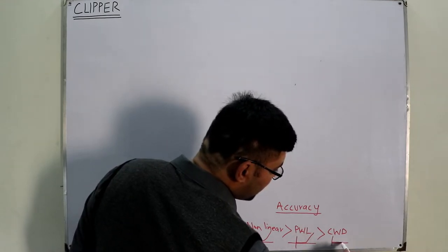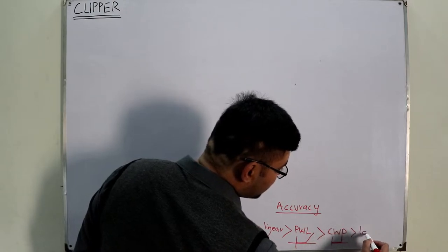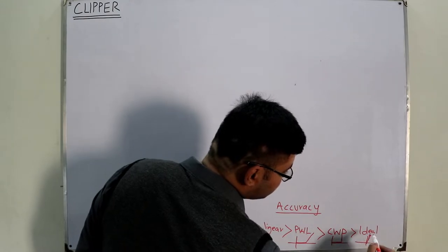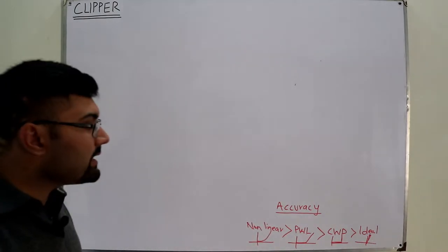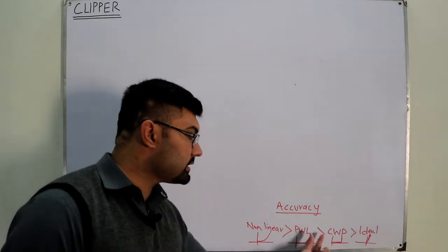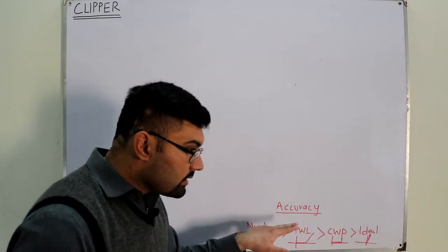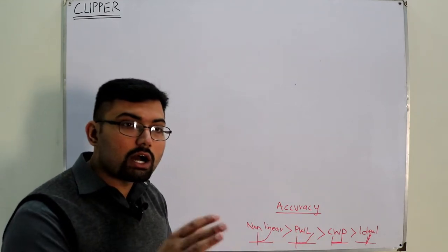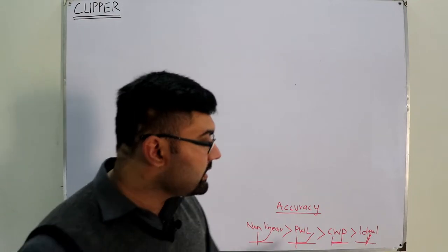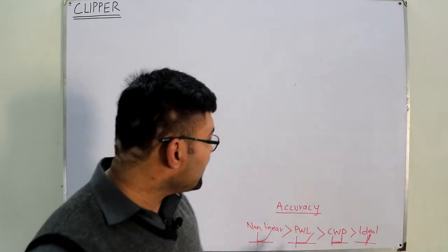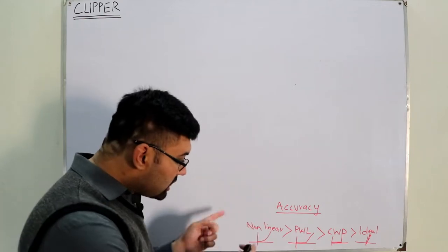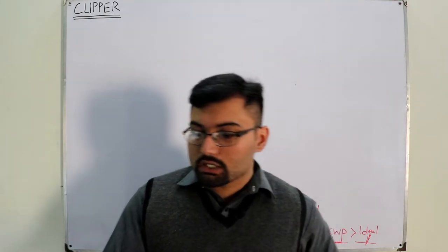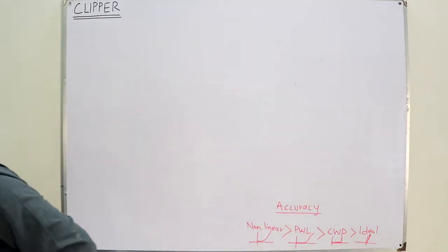Then you have the constant voltage drop model, where the graph is simply a vertical line at the barrier potential. And in the ideal case you have it directly at zero. The thing I want to say is that in the previous video I drew the greater-than sign in the opposite direction. The ideal diode model has the least accuracy, whereas the nonlinear exact model has the greatest accuracy.